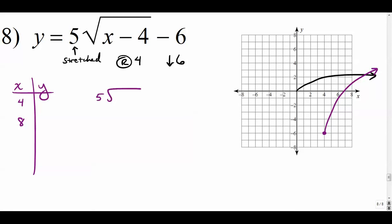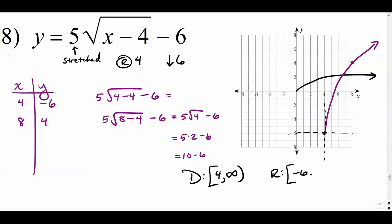So 4, we get 5√(4-4) - 6. So that's 5 times 0 minus 6. 5 times the square root of 8 minus 4 minus 6. That's 5 times the square root of 4 minus 6, which is 5 times 2 minus 6, which is 10 minus 6, which is 4. (8, 4). So when I graphed it, I wasn't even giving it enough credit for how tall it is. (8, 4) is up here. So this graph is really, really tall. But, you know what, the domain is everything, including 4 to the right, and the range is everything including negative 6 up.